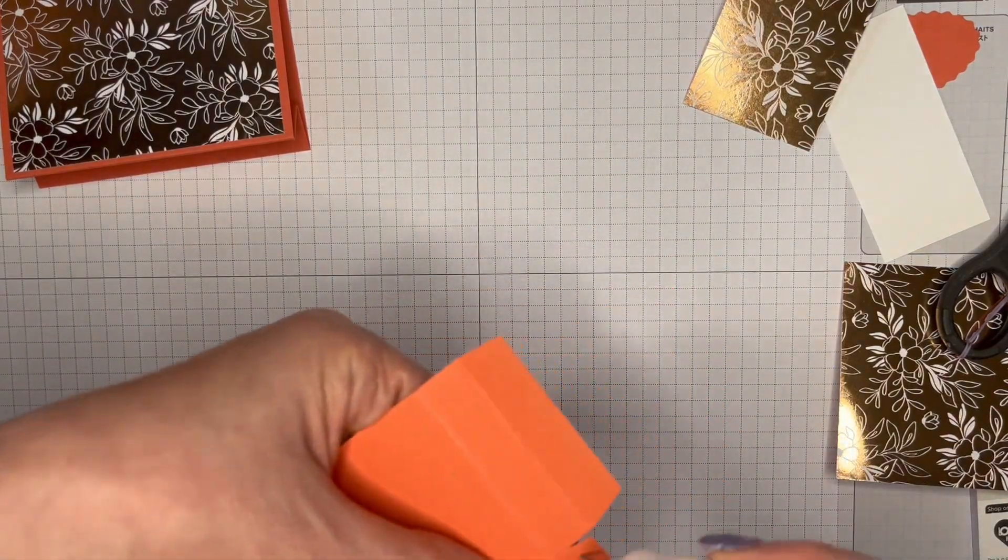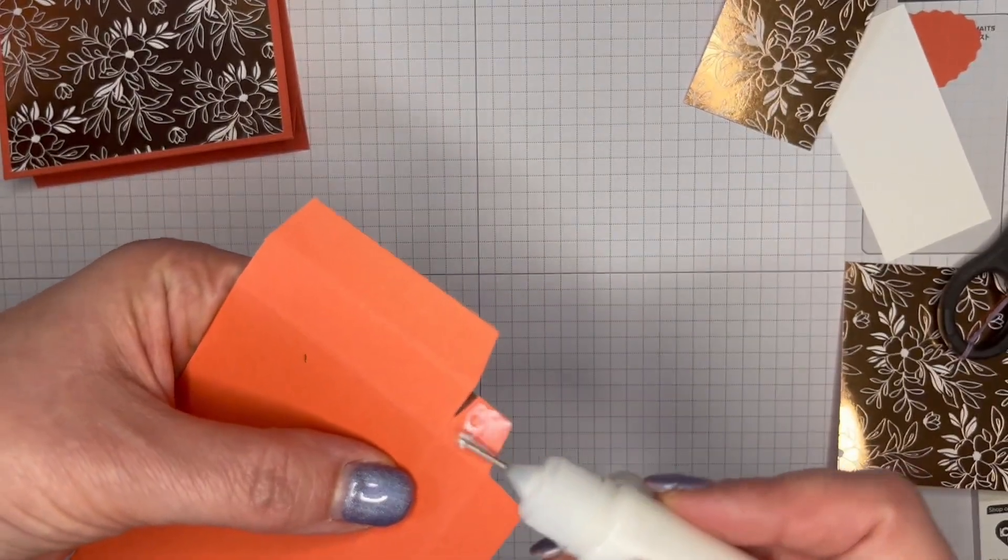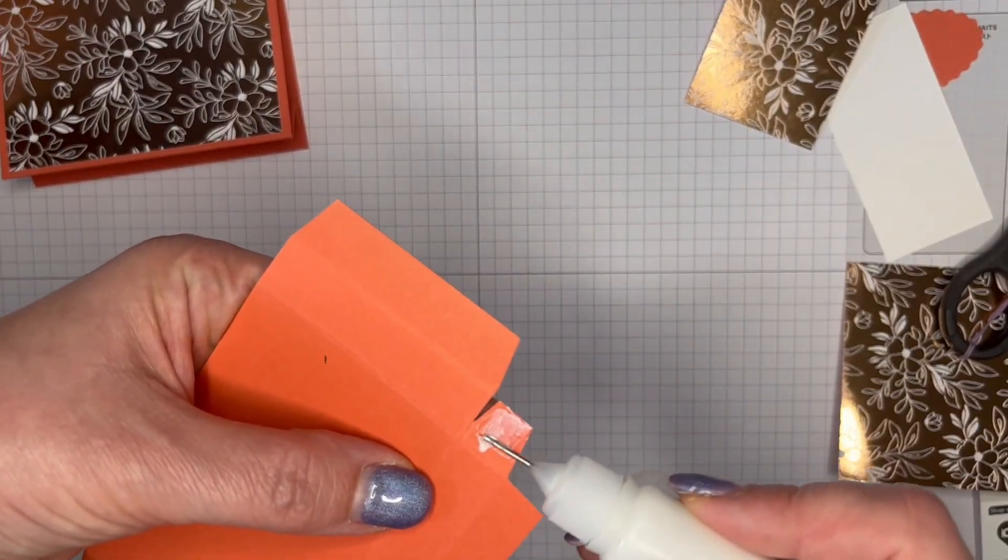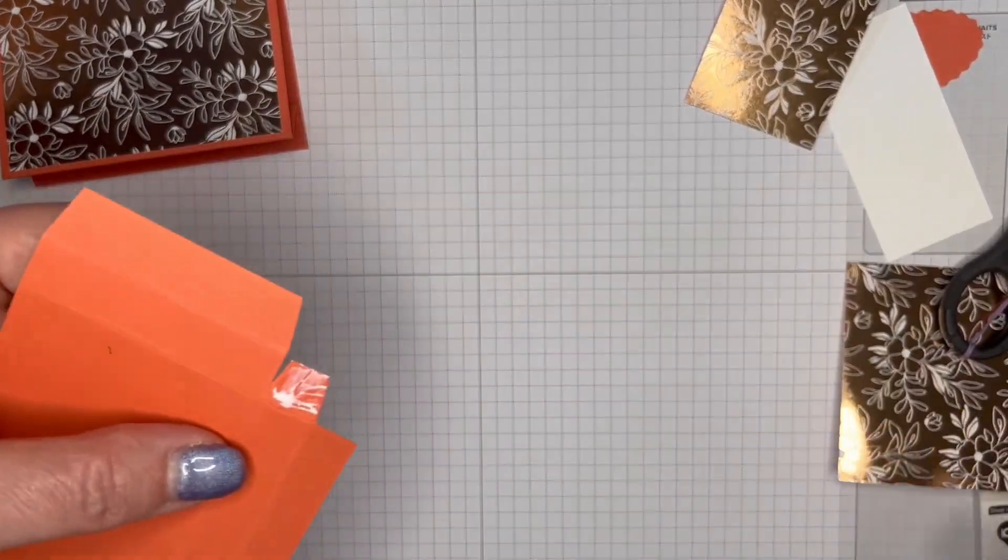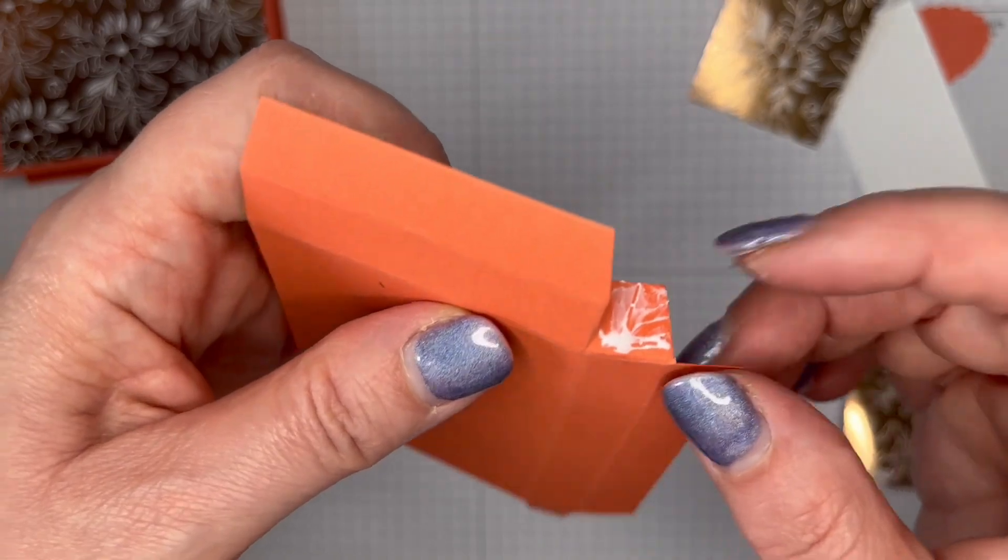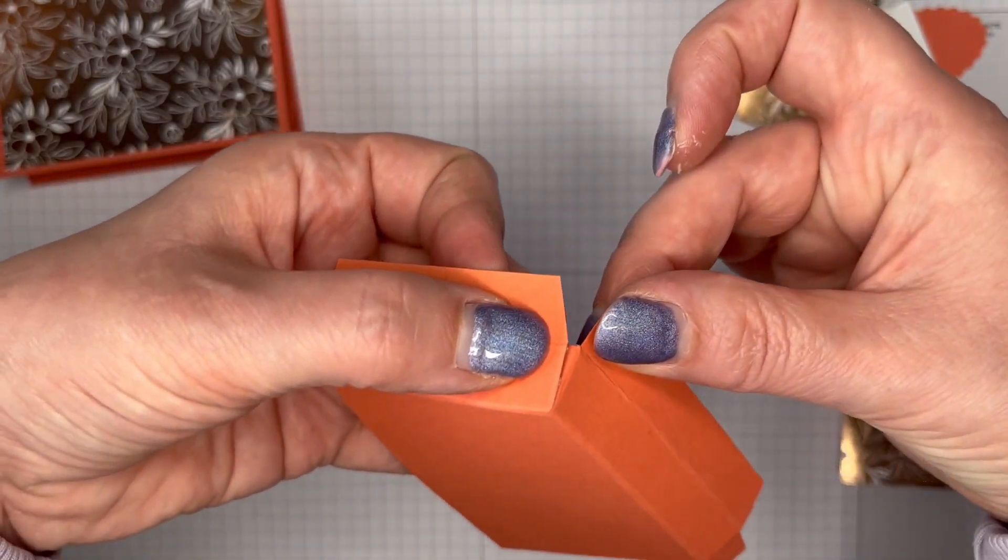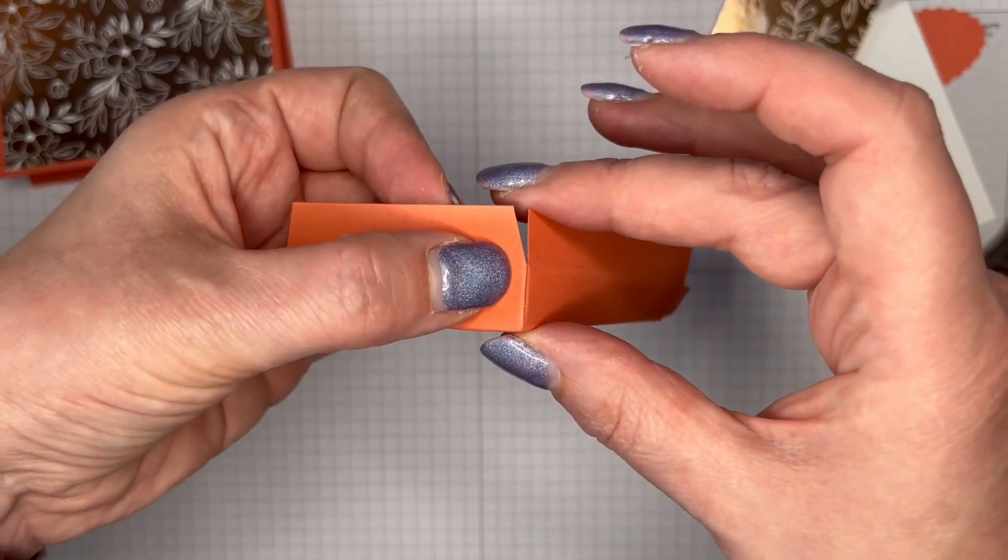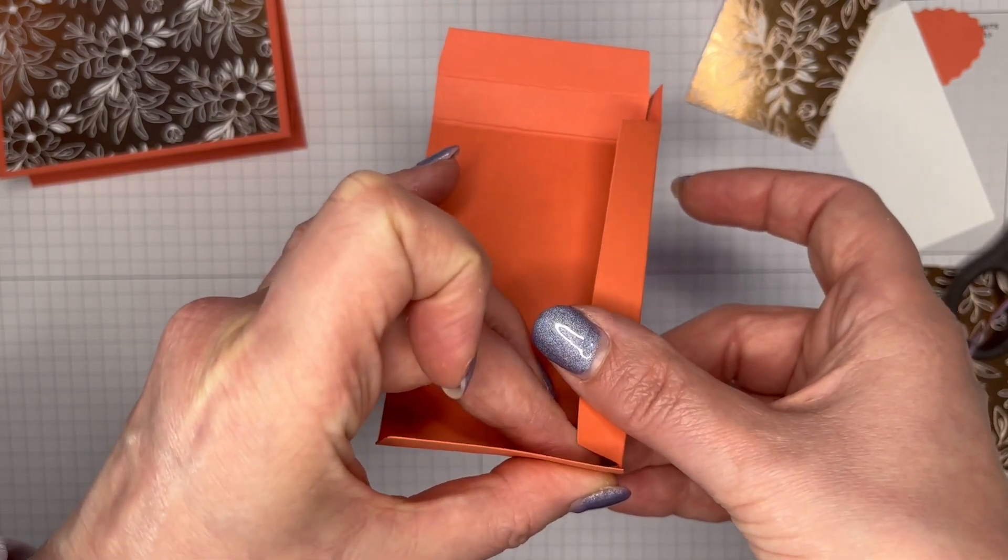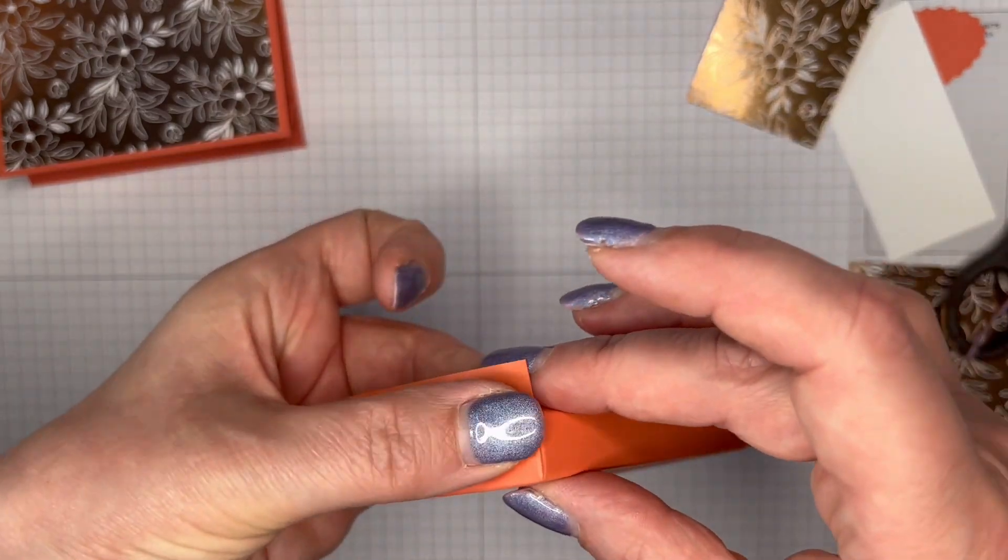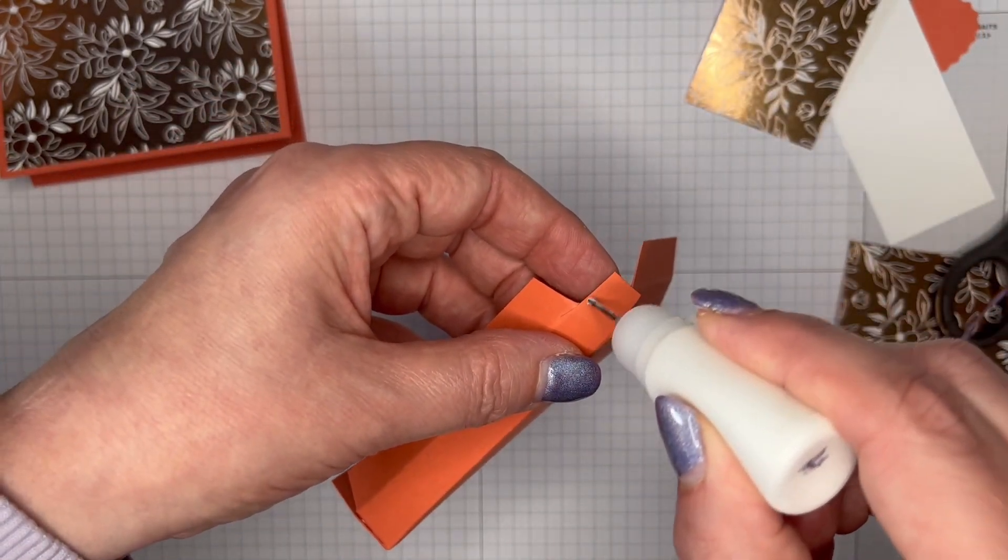Fold that over, and then bring that round so you've got a nice right angle there. And hold that until your glue sets. And then do exactly the same on the other side. So nice even bit of glue on there.